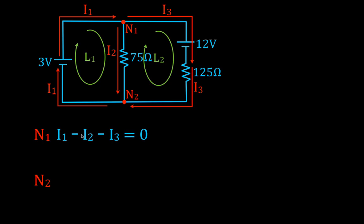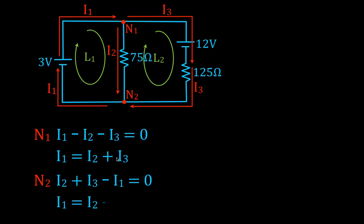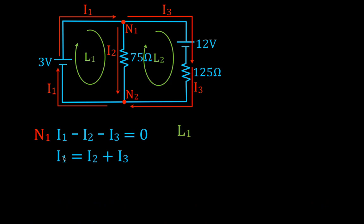Solving that equation, we get I1 equals I2 plus I3. Doing the same thing at N2, we have two currents in — I2 and I3 — and I1 comes out: plus I2 plus I3 minus I1 equals zero. Solving again gives I1 equals I2 plus I3. You'll notice both nodes give us the same equation, so we only need one equation from the current rule.